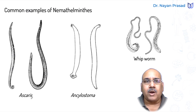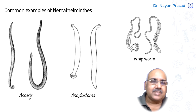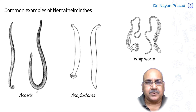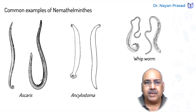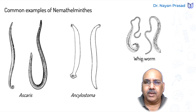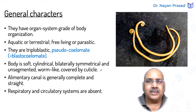Ascaris, commonly called roundworms, have an elongated cylindrical body — meaning in cross-section they appear circular. Ascaris is a common intestinal endoparasite in which males and females are separate. Ancylostoma, the hookworm, also has separate males and females, with a cylindrical unsegmented body. Whipworm, Trichuris trichura, is another common example. These members are dioecious. They are bilaterally symmetrical, having right and left sides similar.